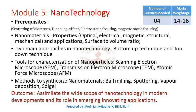If we follow the conventional method of teaching, it will need around four lectures and marks weightage will be around 14 to 16. We will first discuss the properties of nanomaterials, then surface to volume ratio, then two approaches to produce nanomaterials: top-down and bottom-up. We will get introduced to scanning electron microscope, transmission electron microscope, and atomic force microscope, and discuss four methods to synthesize nanomaterials: ball milling, sputtering, vapor deposition, and sol-gel method.